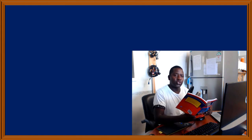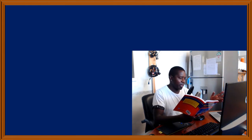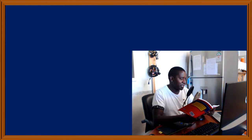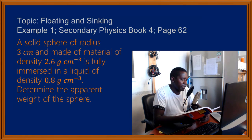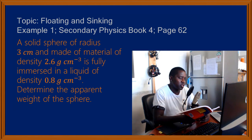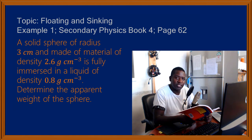I will go to the blue board and show you how to solve this question step by step. Let's start by reading the question. You are given that a solid sphere of radius 3 cm, made of material of density 2.6 g per cm³, is fully immersed in a liquid of density 0.8 g per cm³. Determine the apparent weight of the sphere.